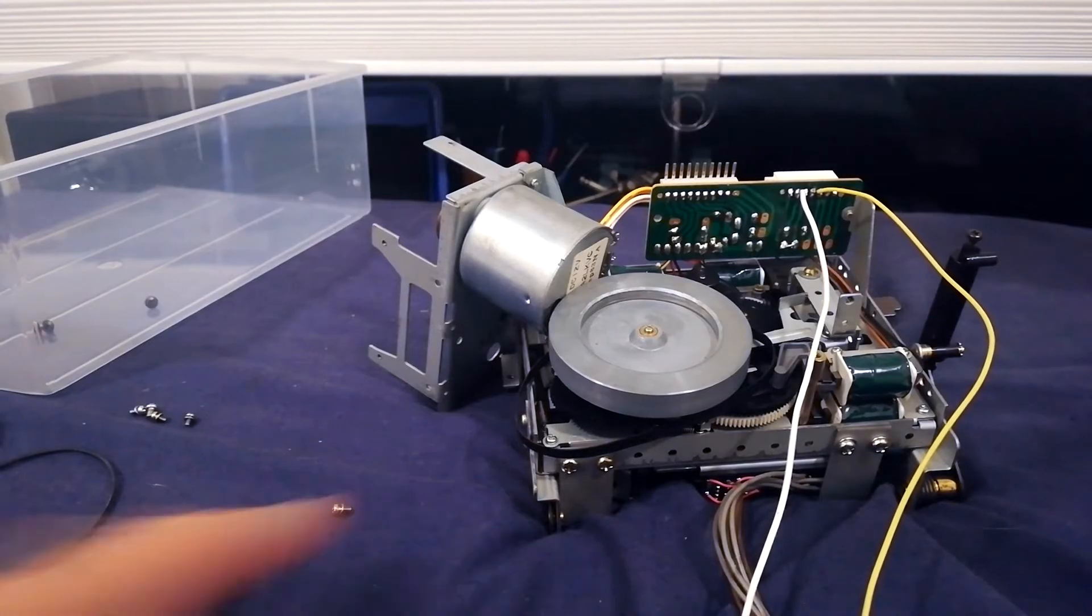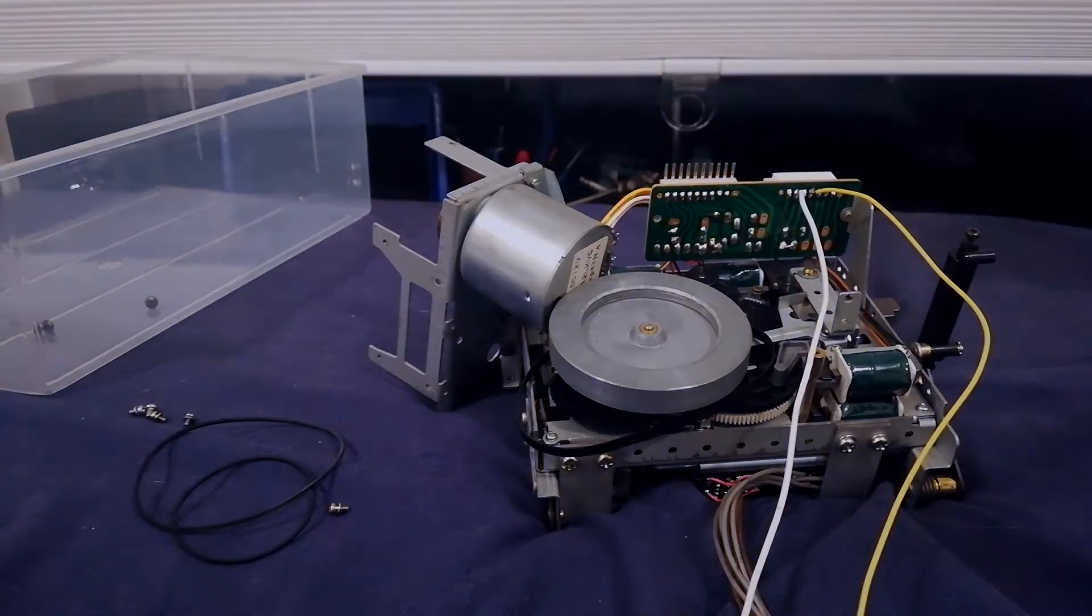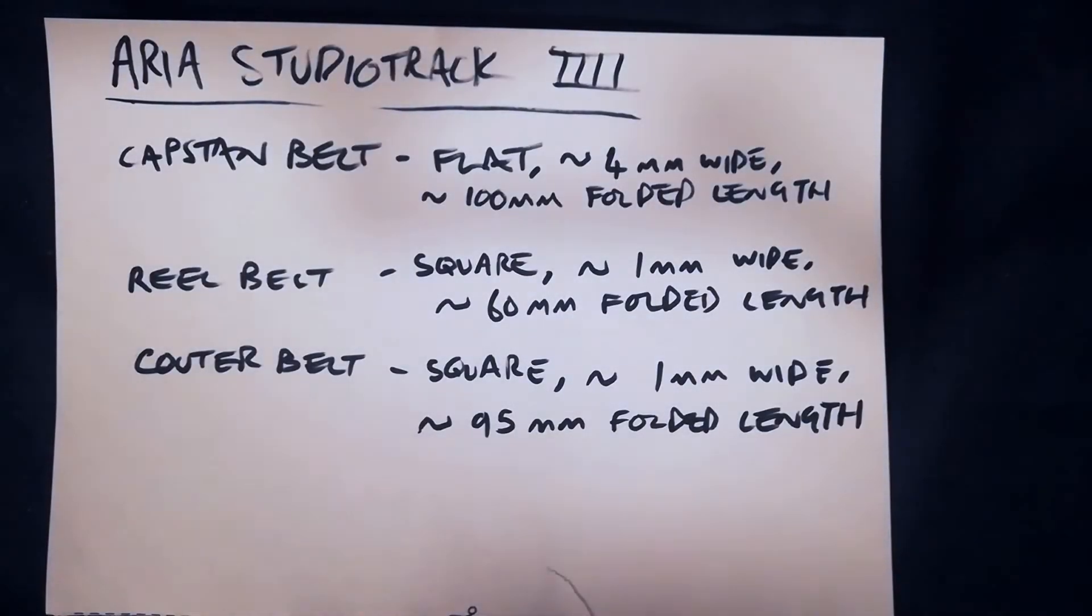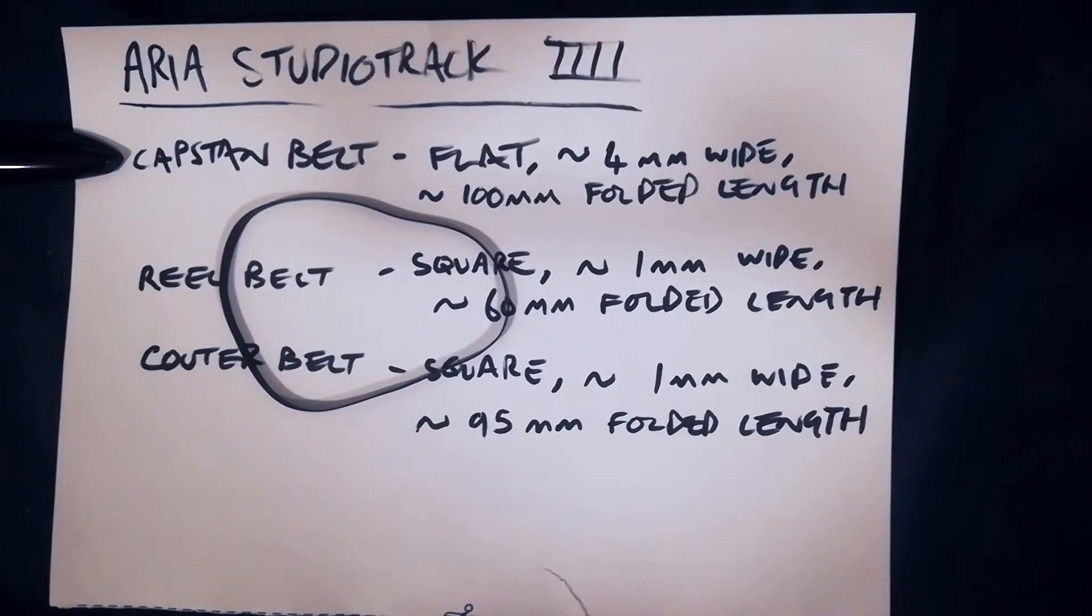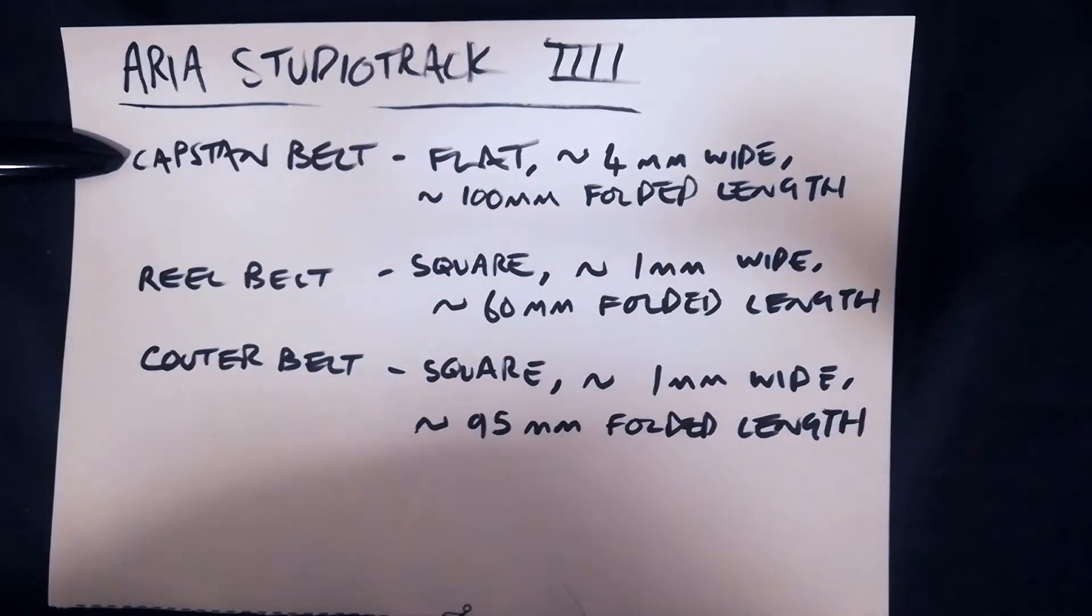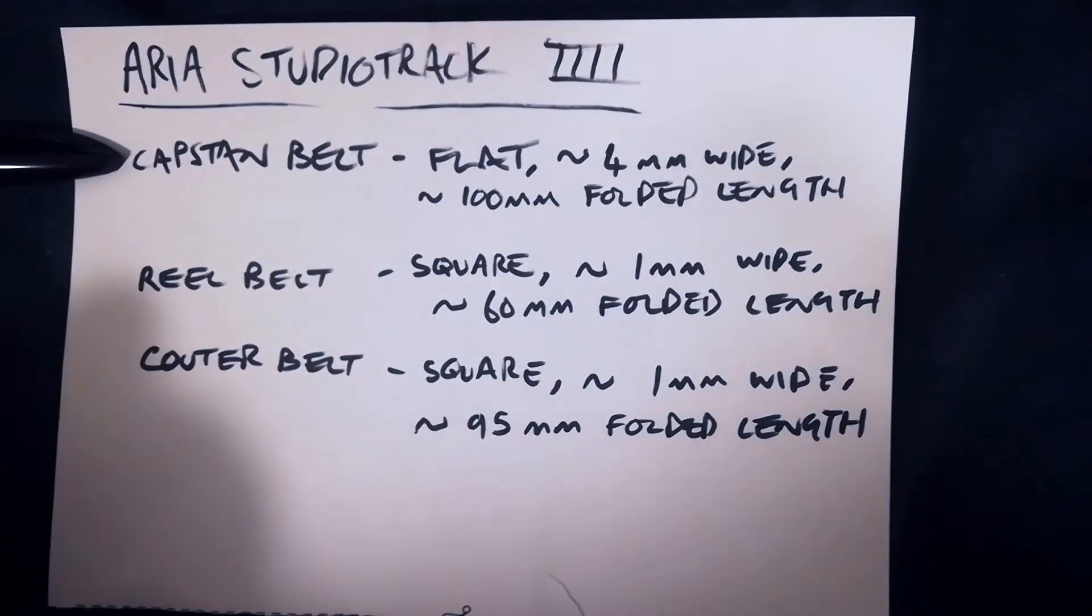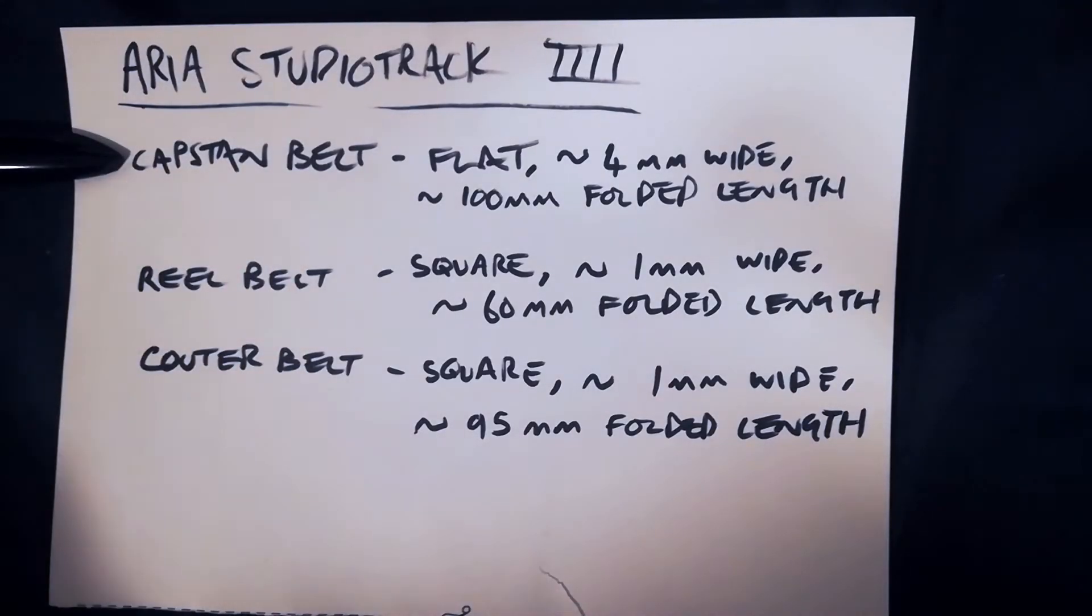Okay here's the belt dimensions for the Aria Studio Track 4. Capstan belt, that is a flat belt. It's about 4mm wide, 3mm would be fine. It's about 100mm folded length. The one I've got here, it's functional, it's very slightly dry. So that's perhaps its slightly stretched length. So I would imagine that anything from 90mm up would be okay, not put too much strain on the motor.